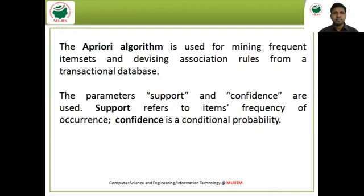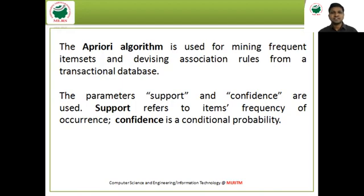The Apriori algorithm is used for mining frequent item sets and devising association rules from transactional databases. The two key parameters are support and confidence. Support refers to an item's frequency of occurrence, and confidence is a conditional probability. These two parameters are important in the Apriori algorithm to find frequent item sets.